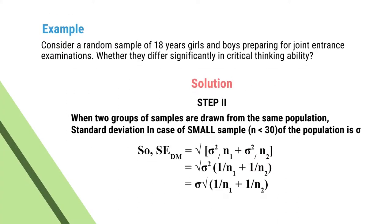On simplification, you find that SED equals the square root of (σ1² / N1 + σ2² / N2). When the two groups of samples are drawn from the same population, the standard deviation is denoted by σ — that is, there is no difference between the standard deviations of the two samples. So SED equals the square root of (σ² / N1 + σ² / N2), which simplifies to σ times the square root of (1/N1 + 1/N2).